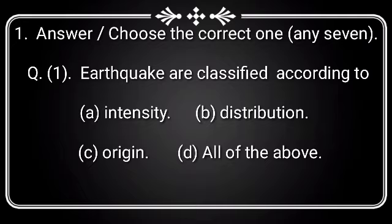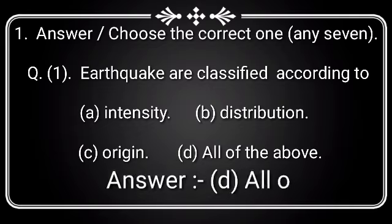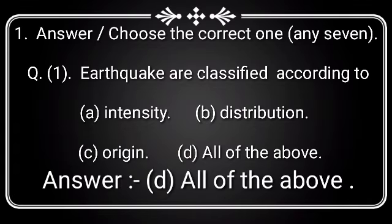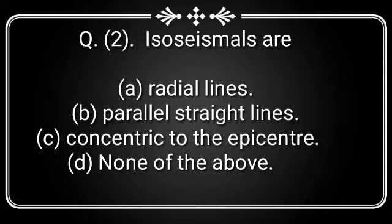Question 1: Earthquakes are classified according to — Option A: Intensity, Option B: Distribution, Option C: Origin, Option D: All of the above. Answer is Option D: All of the above.